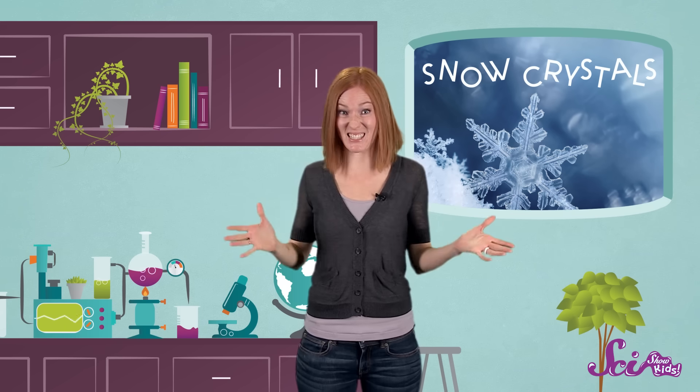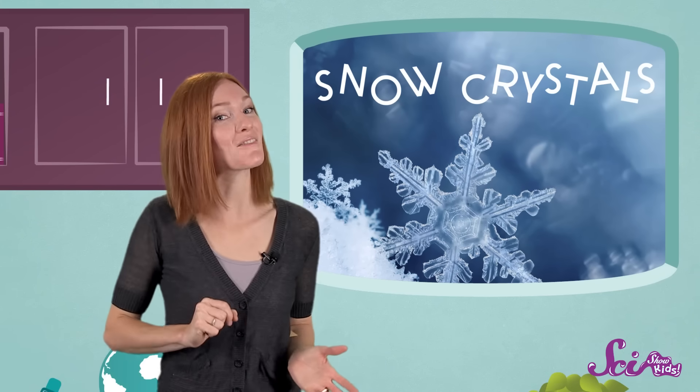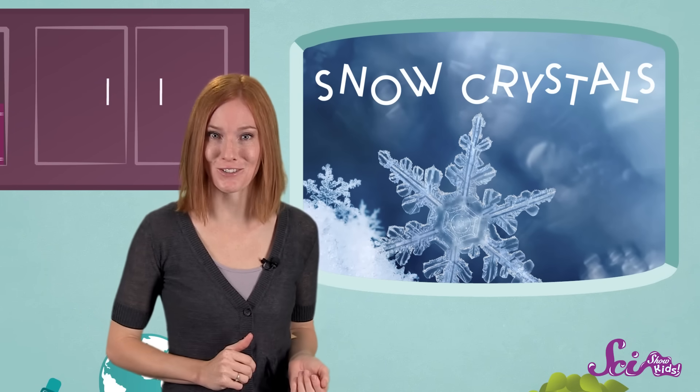Even though all snowflakes have six sides, they can end up looking totally different from one another. In fact, scientists have names for more than 30 different shapes of snow crystals.